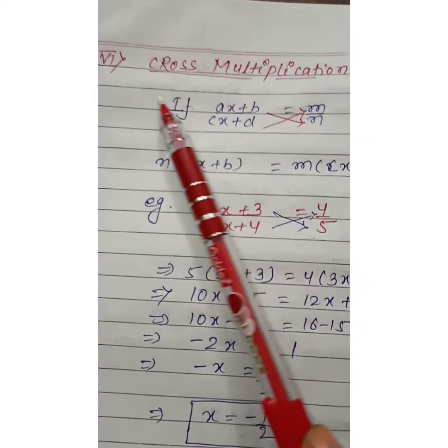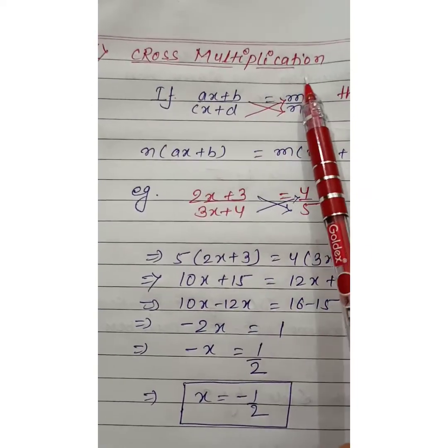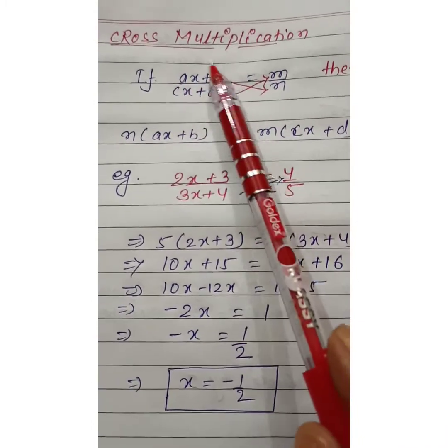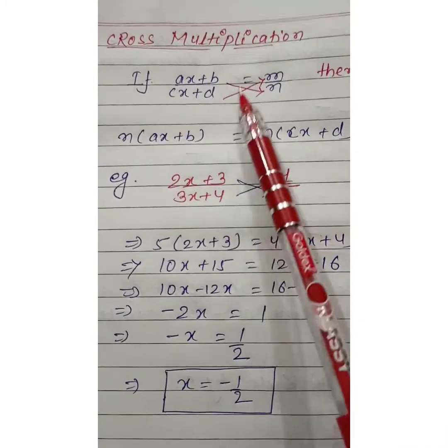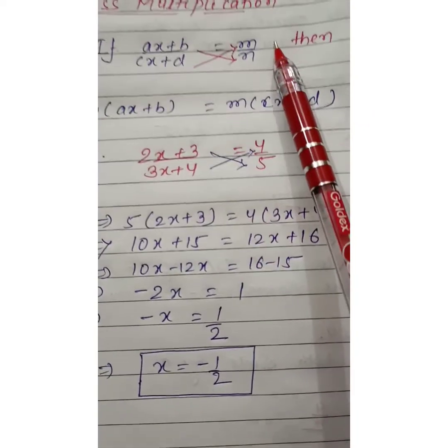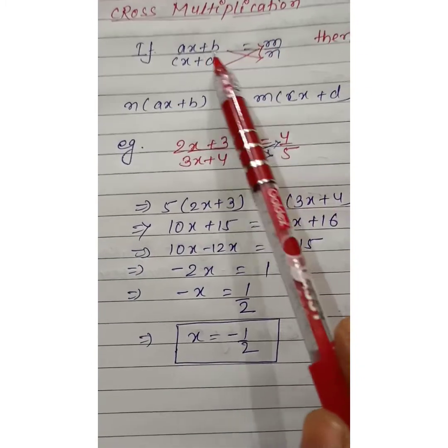And the next condition is cross multiplication. The equation is in this form: (2x plus 3) by (3x plus 4) equals fractional value. When the equation is in this form, we cross multiply.